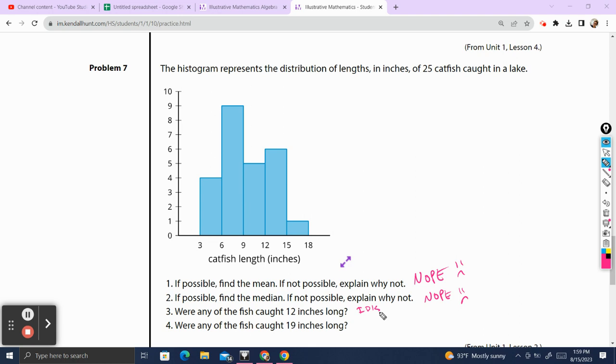Finally, were any of the fish caught 19 inches long? We know that there was one fish caught between 15 and 18 inches, but there is no data above this. So that is enough to conclude there were no fish caught that were 19 inches long. If there was something that was 19 inches long, you would see an extra box over here. Because there isn't, it means that the biggest possible fish would be 18 inches long.